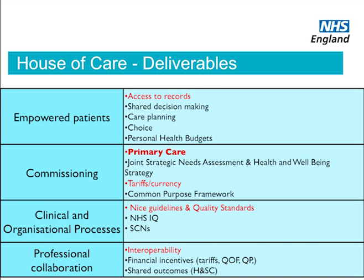Clinical and organisational processes — NICE guidelines and quality standards, NHS IQ, strategic clinical networks, and professional collaboration — are all part of this. Interoperability and the IT agenda matter, as do financial incentives, which are currently all geared for planned care, not long-term conditions. We don't want money to follow the patient to the wrong place. And we need shared outcomes across health and social care — I believe one of the biggest breakthroughs will be a shared identifier between health and social care to track where investment is made and how it benefits both systems.